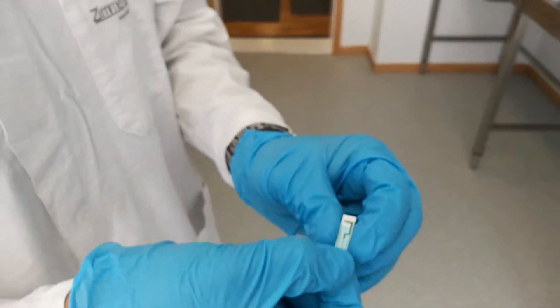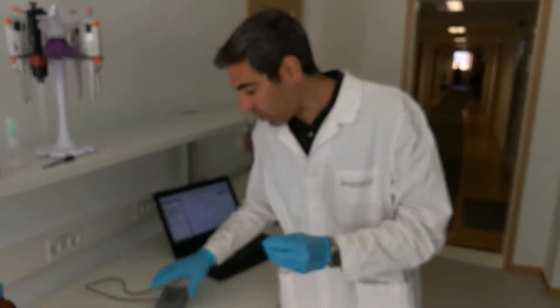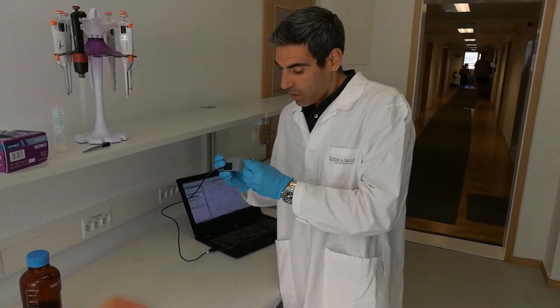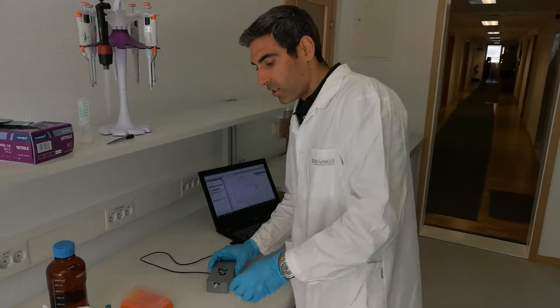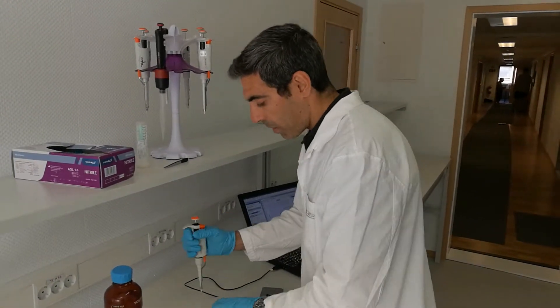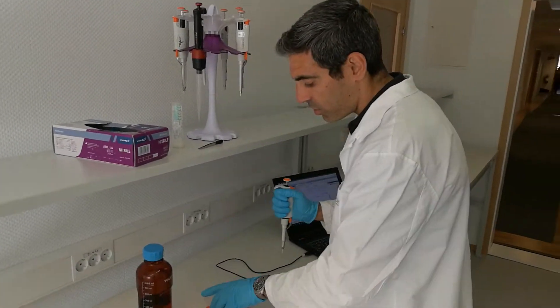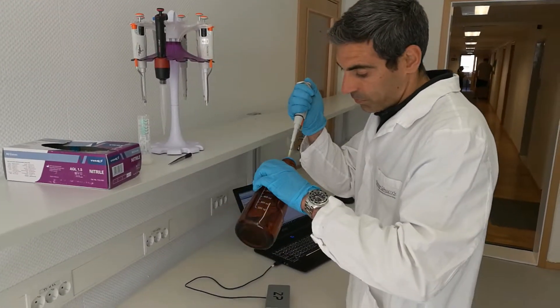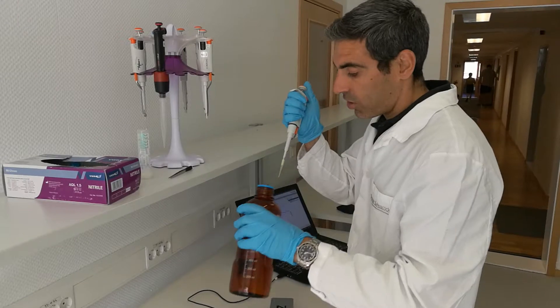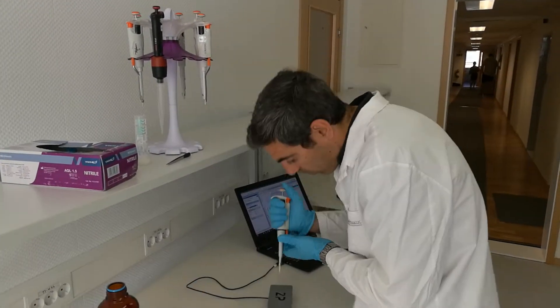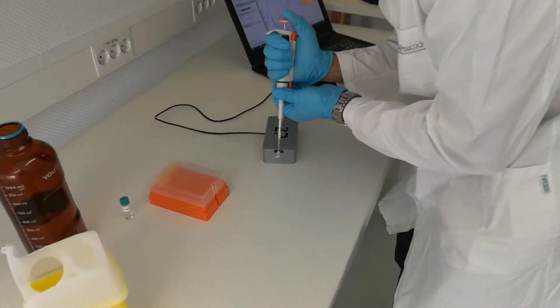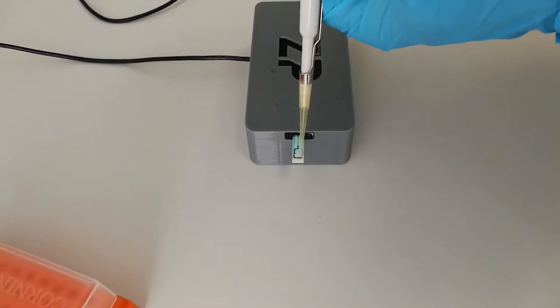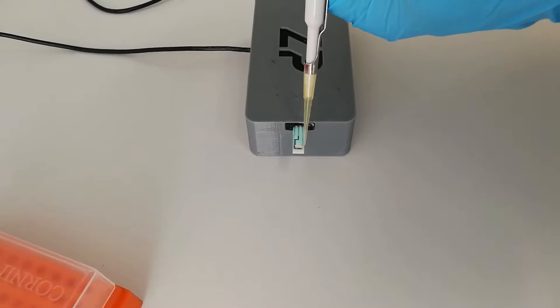So what we're going to do is connect this sensor to a potentiostat box with a connector. Once this is connected, we are going to pipette 50 microliters of PBS solution onto the electrode to create our electrochemical cell. Just make sure you cover the electrodes well.